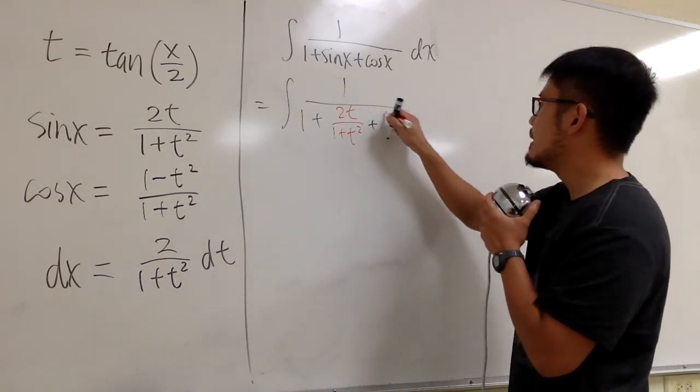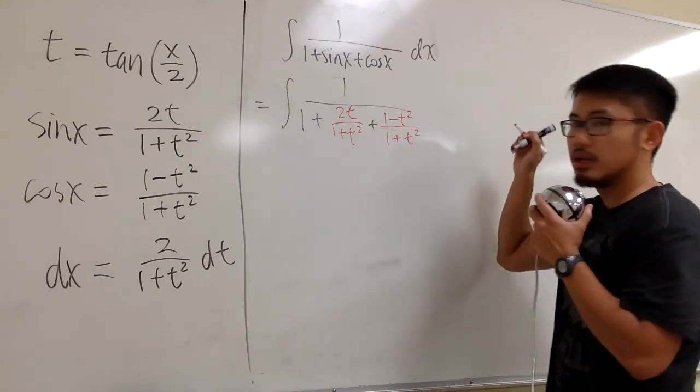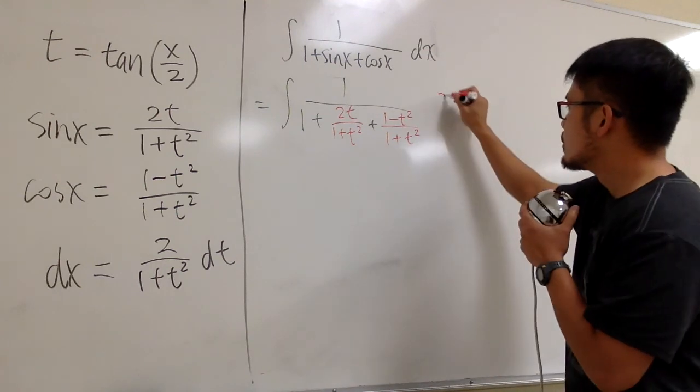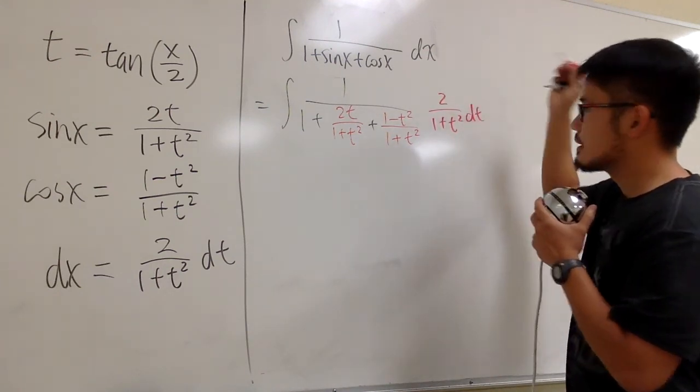which is 1 minus t squared over 1 plus t squared. And don't forget, we still have the dx, which is 2 over 1 plus t squared dt.